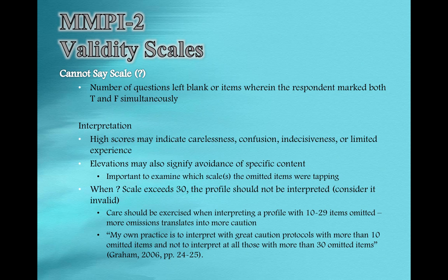Dr. Graham, who I had the good fortune of having as an instructor at Kent State and one of the gurus of MMPI work for many decades, has a much more stringent cutoff. He would say 10 or more items can invalidate the profile. So certainly if you see 10 to 29 items in that range, you should be very cautious. Even if you get an interpretive report with 21 or 22 items and it still says valid with caution, there is still reason to wonder how valid the results are, and you may want to consider it an invalid profile.